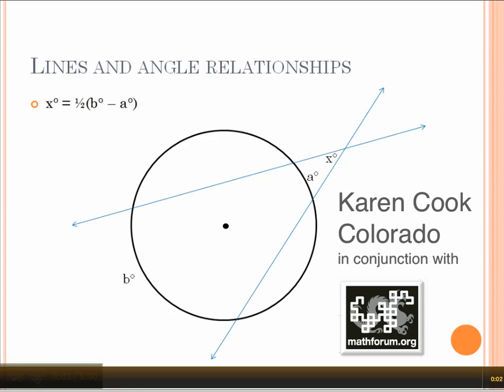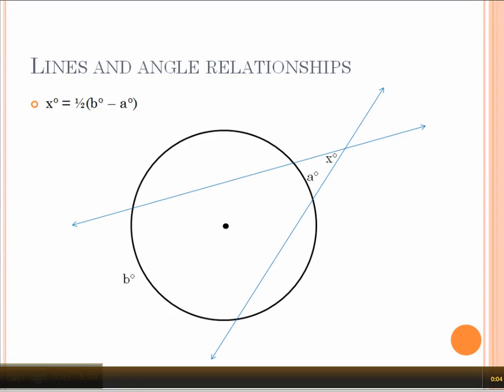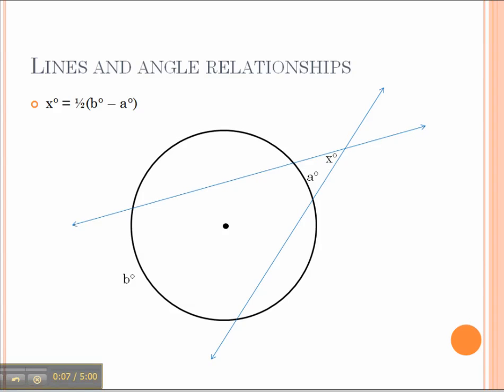We've already talked about angles that are created on the edge of the circle and somewhere in the center of the circle. Well, now we need to look at angles that are created outside the circle,